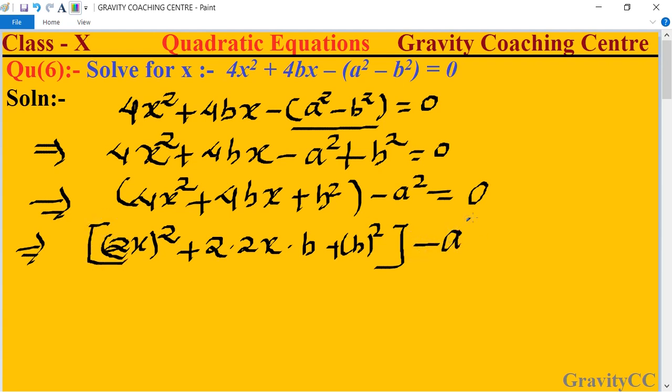Minus a² equal to zero. The first part is in the form of a² plus 2ab plus b², so it will become (2x + b)² minus a².